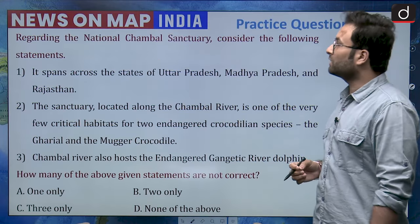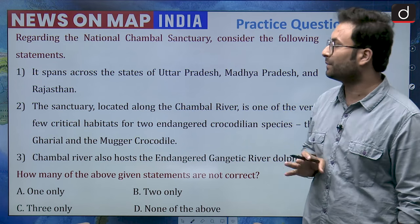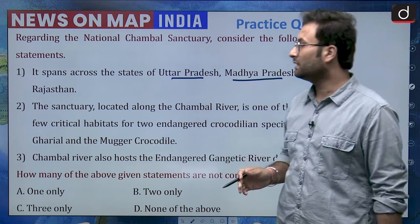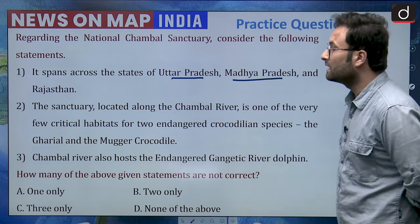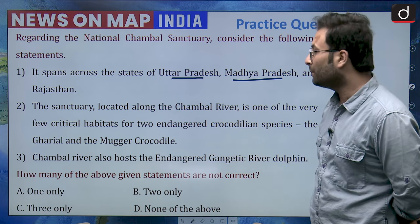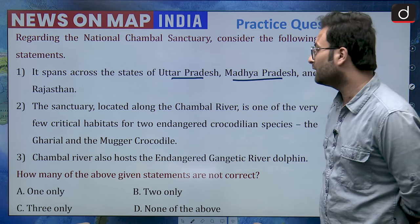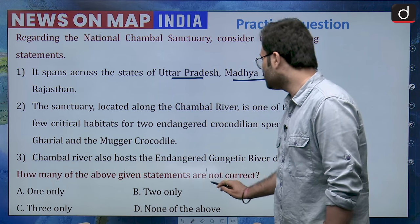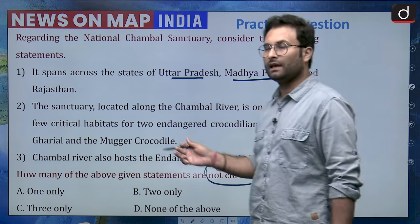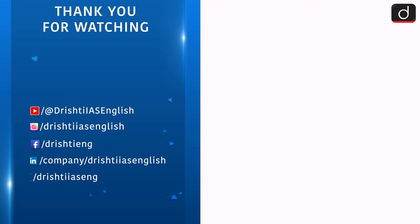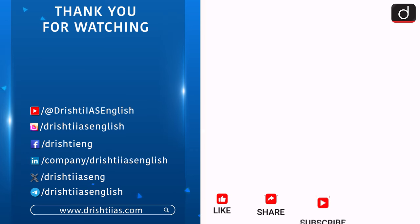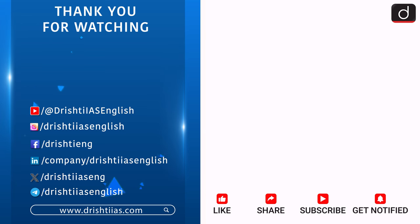Now the practice question for next time: consider the following statements about the National Chambal Sanctuary. First, it is spread across the states of Uttar Pradesh, Madhya Pradesh, and Rajasthan. Second, the sanctuary located along the Chambal river is one of the very few critical habitats for two endangered crocodile species — the Gharial and the Mugger crocodile. Third, the Chambal river also hosts the endangered Gangetic river dolphin. How many of the given statements are not correct? Please answer in the comment box. With that, I would like to wrap up the session. If you have not subscribed the channel, please subscribe. Thank you.